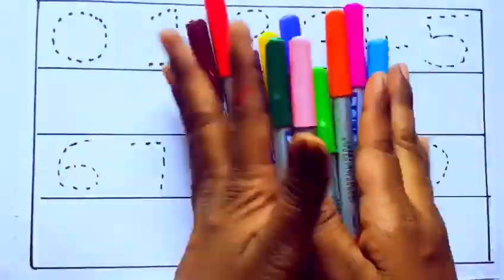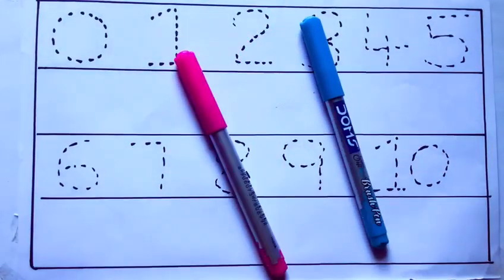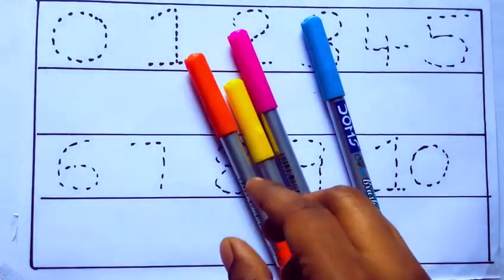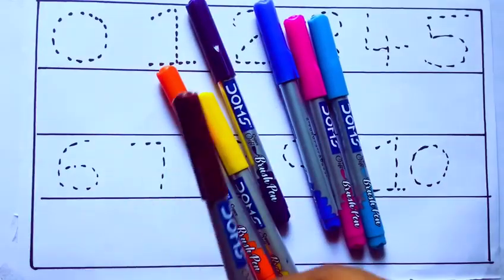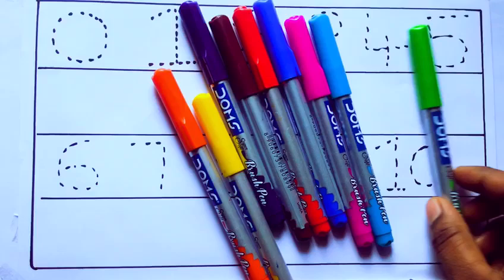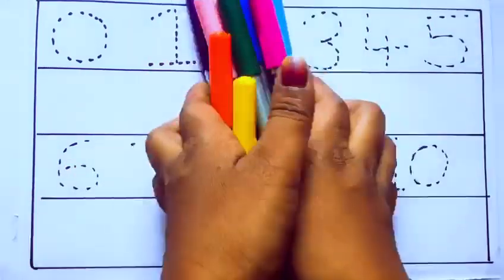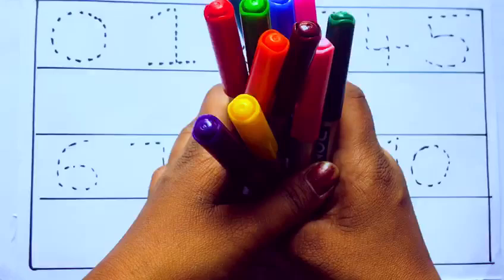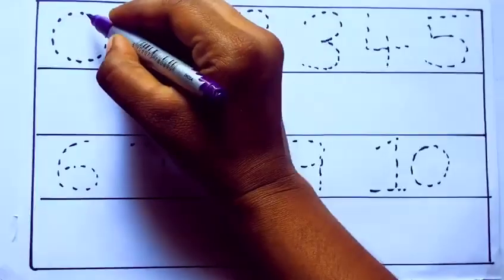all the color pencils. Let's learn the names: sky blue, pink, yellow, orange, violet, blue, brown, red, green, blue-green, and pink. Let's draw numbers.